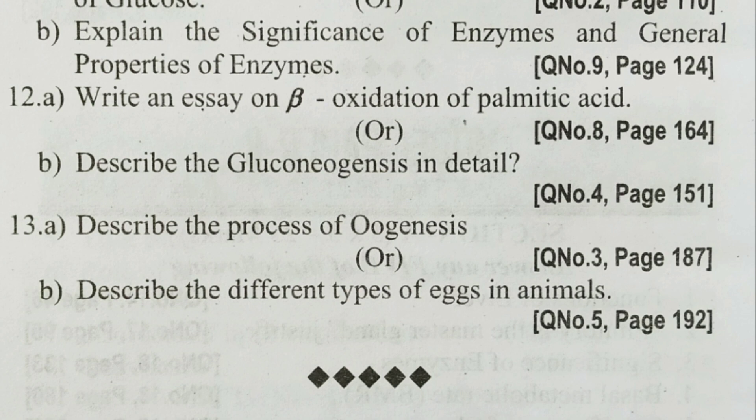Question 12B — write an essay on beta-oxidation of palmitic acid. Question 12B — describe gluconeogenesis in detail. Question 13B — describe the process of oogenesis. Question 13B — describe the different types of eggs in animals.